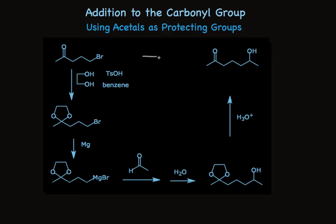TsOH is our organic equivalent to sulfuric acid. It's soluble in organic solvents because it has a benzene ring, and it has a functional group that looks a lot like sulfuric acid, so it's a very strong acid. There's also a methyl group — you see why we often just say TsOH. We use benzene as a solvent because it helps us remove water, which drives the acetal formation to completion.